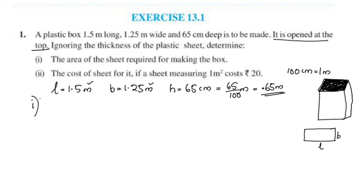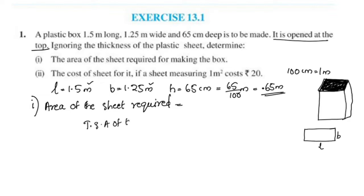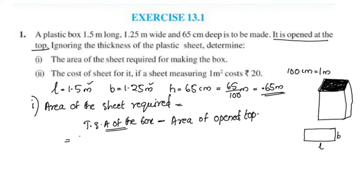The area of the sheet is equal to the total surface area of the box minus the area of the opened top. Total surface area of the box is 2 times (LB + BH + HL), then we subtract the area of the top, which is L times B.